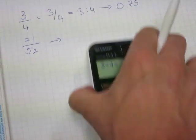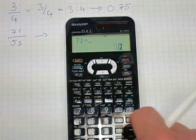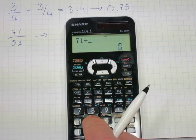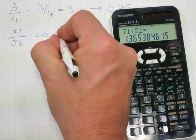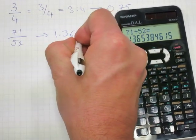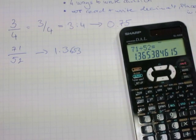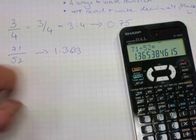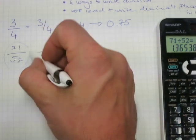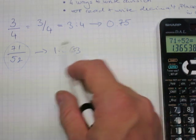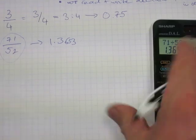To make it into a decimal all you need to do is 71 over 52 equals that number. In its decimal format is 1.365. That's the decimal format for it. This is an improper fraction and it's got a number greater than 1 because it is an improper fraction.